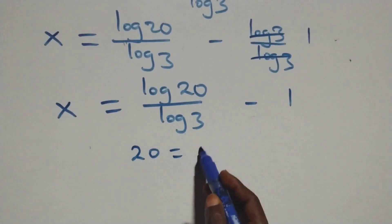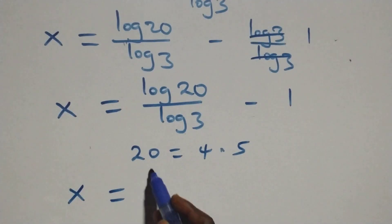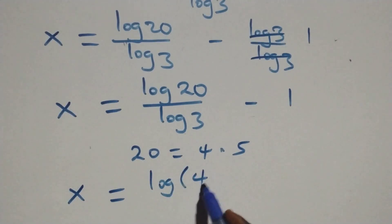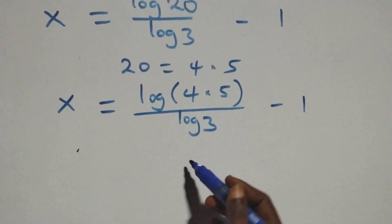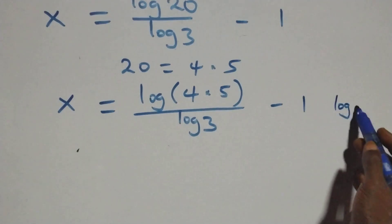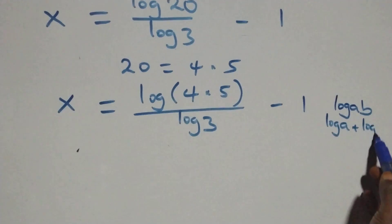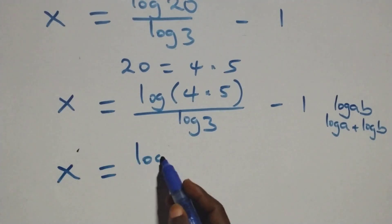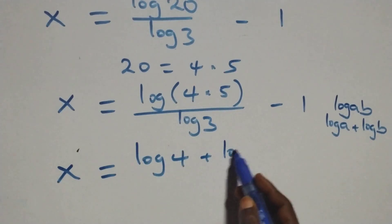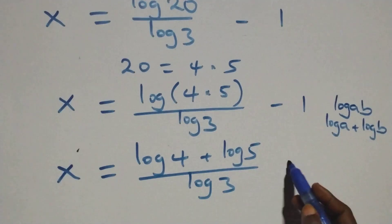We can write 20 as 4 times 5. So x equals log(4 times 5) over log 3, minus 1. This follows the product rule of logarithms: log(a times b) is the same as log a plus log b. So x equals (log 4 plus log 5) over log 3, minus 1.